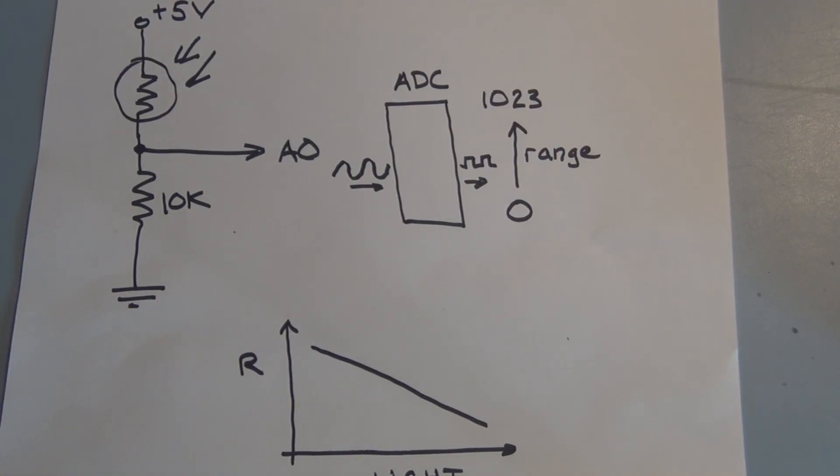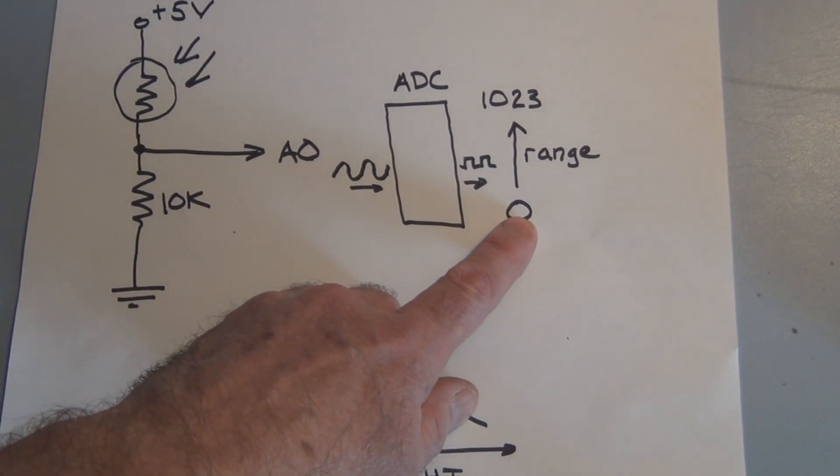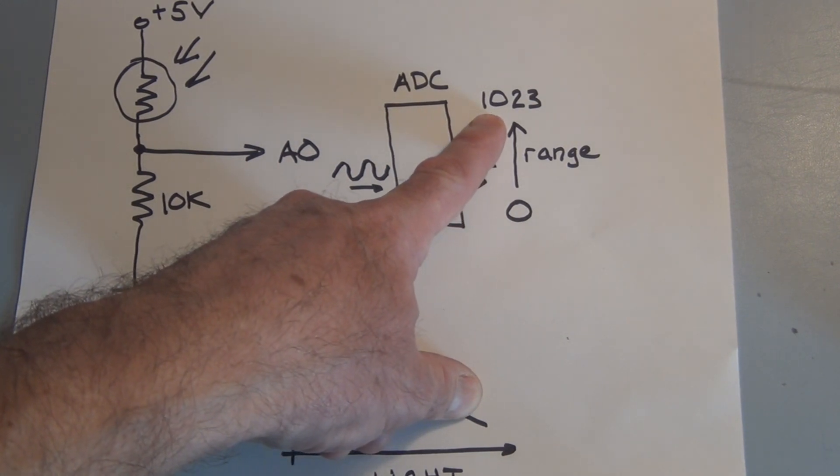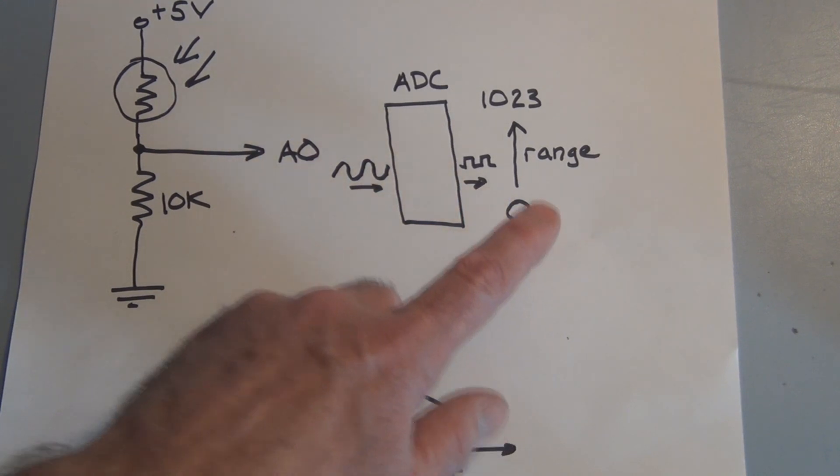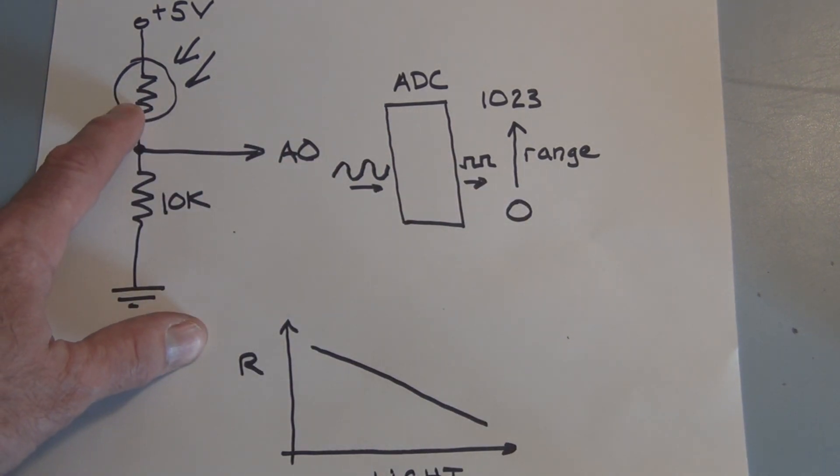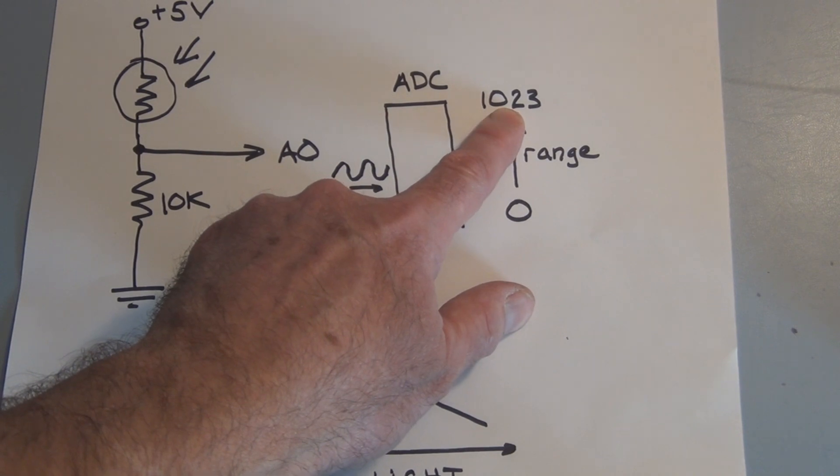We're going to solve that problem by programming in a calibration sequence. For five seconds the microcontroller will look at the lowest level of light in the room and the highest level of light in a room and then assign the 0 and the 1023 range to those values respectively. So the lowest level of light will be determined and then given the value of 0 and then the highest level of light will be determined and given the value of 1023.